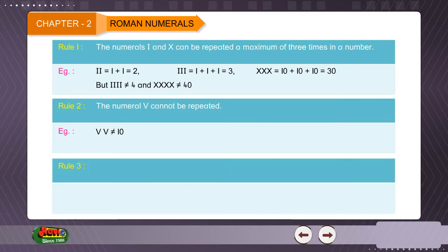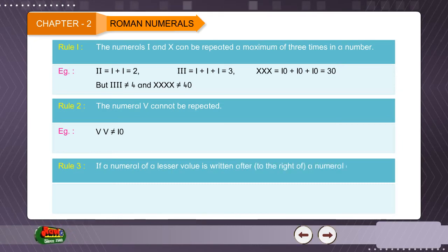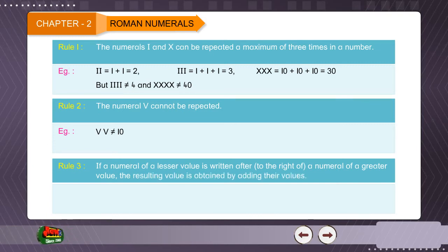Rule 3. If a numeral of a lesser value is written after to the right of a numeral of a greater value, the resulting value is obtained by adding their values. Example, Roman numeral VI is equal to 5 plus 1 is equal to 6. Roman numeral XV is equal to 10 plus 5 is equal to 15.